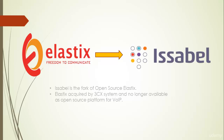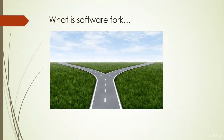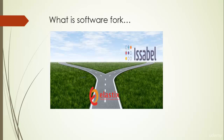Issabel is a fork of open source Elastix. Elastix was acquired by 3CX Systems and is no longer available as an open source platform. So what is a software fork? In software engineering, a project fork happens when developers take a copy of source code from one software package and start independent development on it, creating a distinct and separate piece of software. The team from Anthosius created the fork from the existing Elastix and named it Issabel, an open source IP telephony platform.